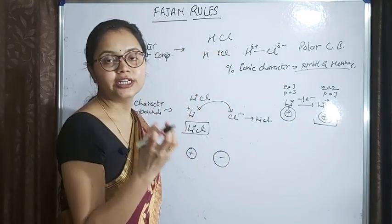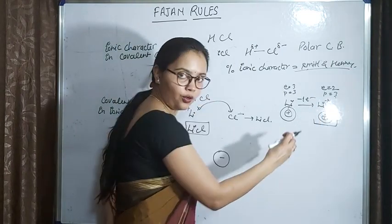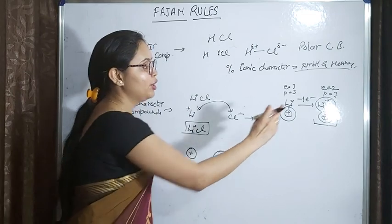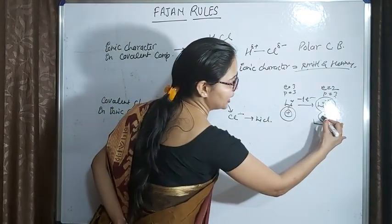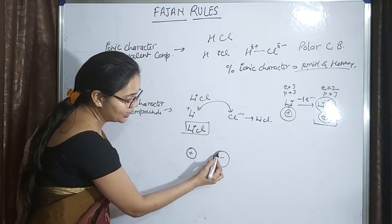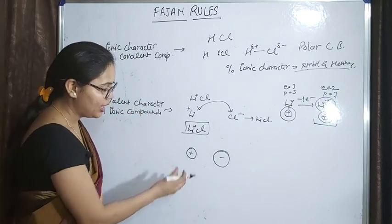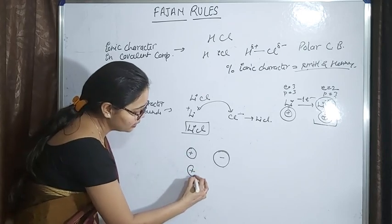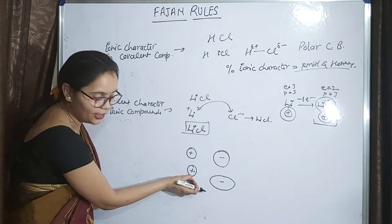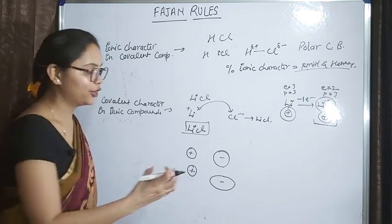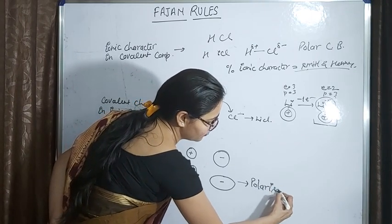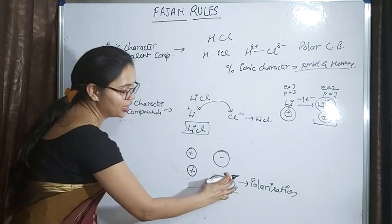In this case, the positive charge is present in a small volume — there is a high charge density in Li⁺. Because of this high charge density and greater effective nuclear charge, Li⁺ will attract the electron cloud of the anion. When it pulls the electron cloud of the anion, the shape of the anion changes — this is called distortion of the electron cloud of the anion, and this distortion is known as polarization.